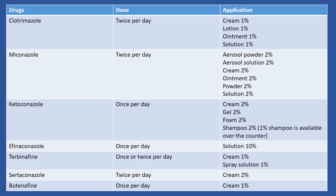Efinaconazole: comes as a 10% solution — apply once a day. Terbinafine: available as 1% cream and spray — apply once a day. Sertaconazole: comes as 2% cream — apply twice a day. Butenafine: available as 1% cream — apply once a day.